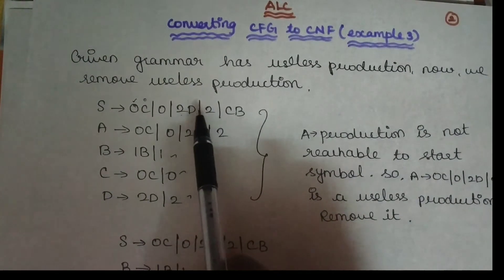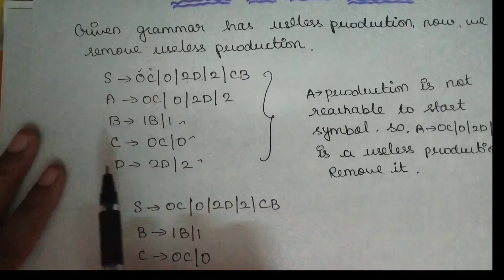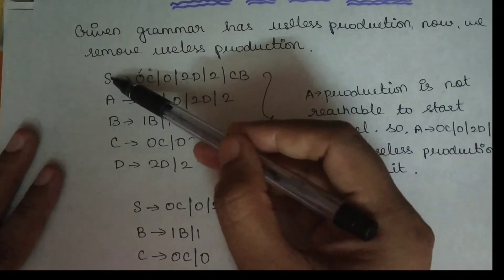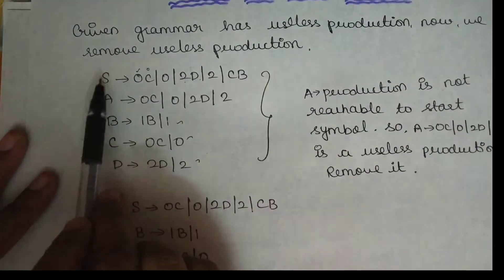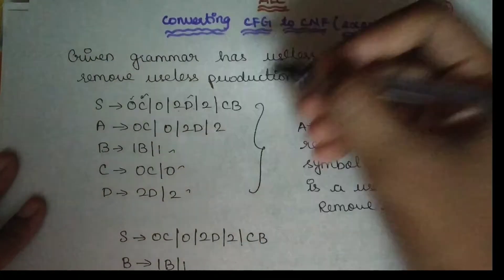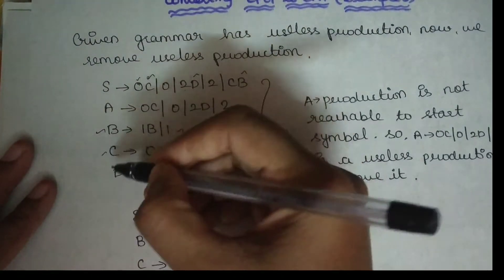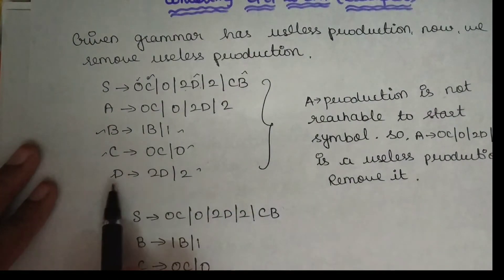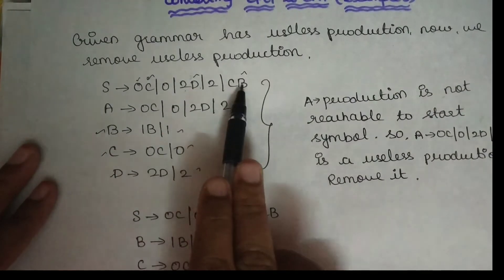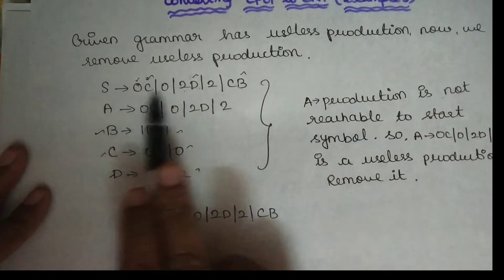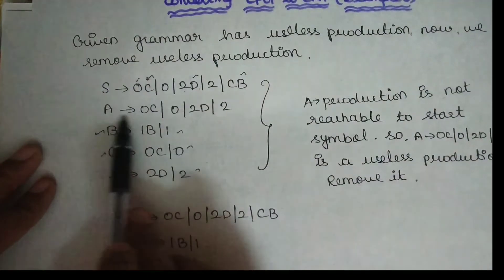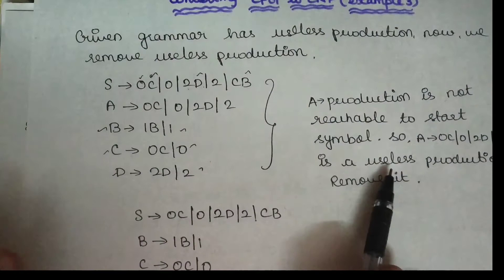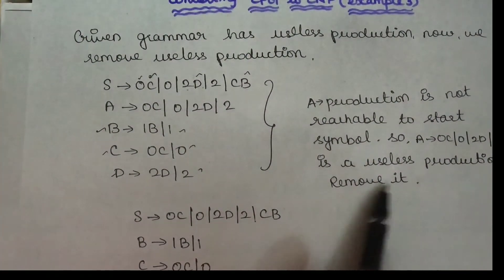Now check for non-reachable symbols. Starting from the start symbol, check which variables are reachable. Check all variables linked or reachable from the start symbol. If a variable is not reachable, remove it. Variables C, D, and B are reachable from the start symbol. A is not the start symbol — check if it is reachable. If not, you can remove it.